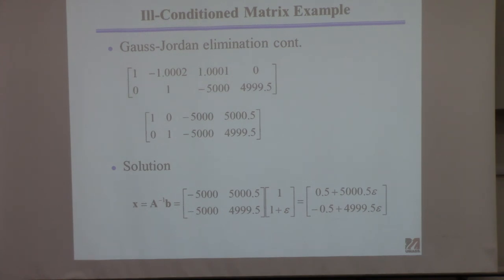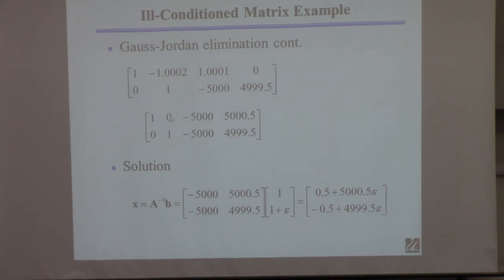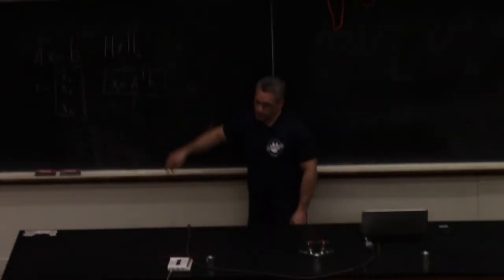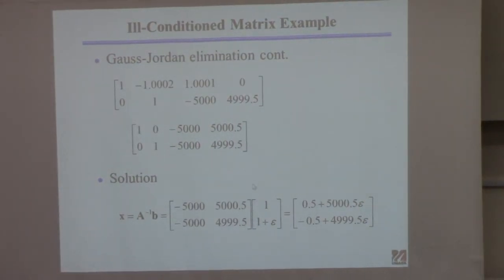Continuing the elimination: multiply the second row by the appropriate constant to zero out the upper-right element of the first row. After completing the Gauss-Jordan process, you get the identity matrix on the left and a matrix with very large elements on the right — that's your inverse matrix. The elements look unusually large, but we proceed.